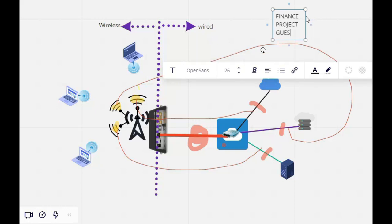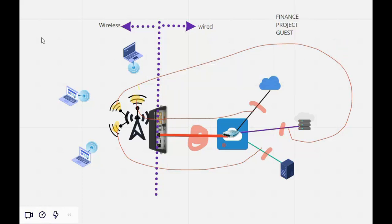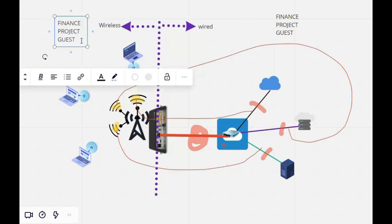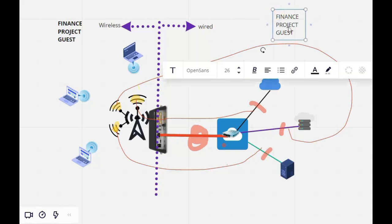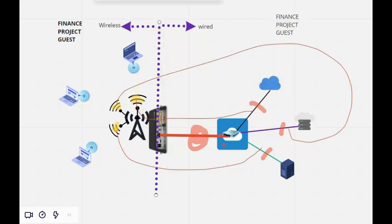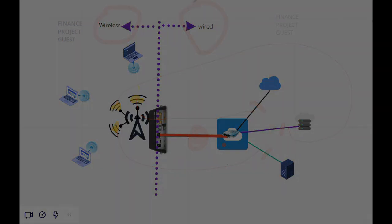That means we have three different teams requiring access to the network infrastructure, sitting on both the wireless side and the wired side of the network. This video will, in detail, show us how to create this unique network that will have three LANs or three virtual networks segregated by the wireless access points and the wired network. Sit down and enjoy this.